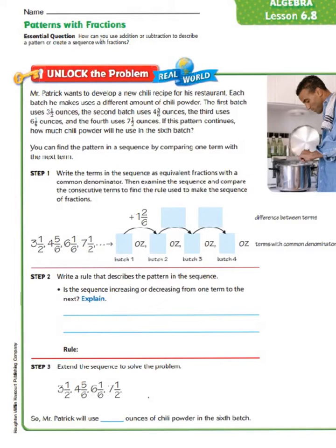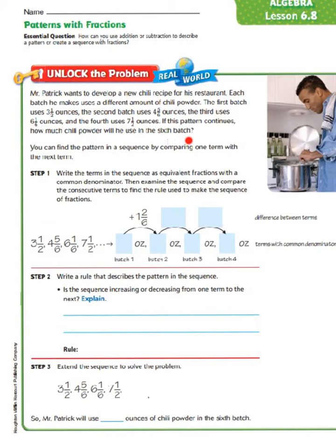Let's begin by looking at a word problem. Mr. Patrick wants to develop a new chili recipe for his restaurant. Each batch he makes uses a different amount of chili powder. The first batch uses 3 and 1/2 ounces, the second batch uses 4 and 5/6 ounces, the third uses 6 and 1/6 ounces, and the fourth uses 7 and 1/2 ounces. If this pattern continues, how much chili powder will he use in the sixth batch?